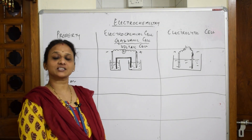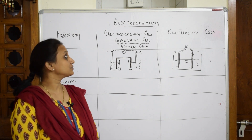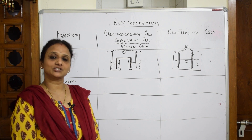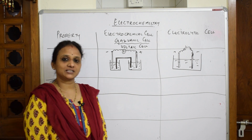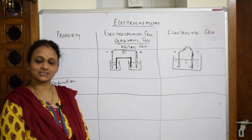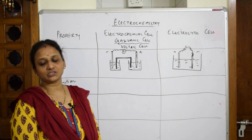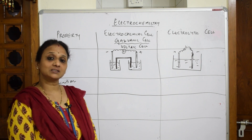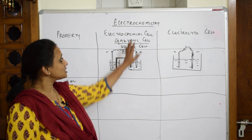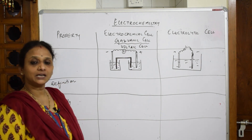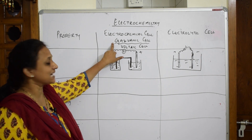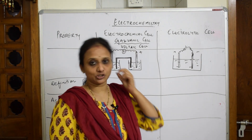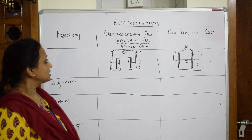Let's start with your first topic of electrochemistry: the differences between electrochemical cells and electrolytic cells. Once we understand this concept, we can gradually go into cell notation, cell potentials, cell potential calculations, the Nernst equation, and concentration cells. Electrochemical cells are also called galvanic cells or voltaic cells, while in electrolytic cells we study the electrolysis process.